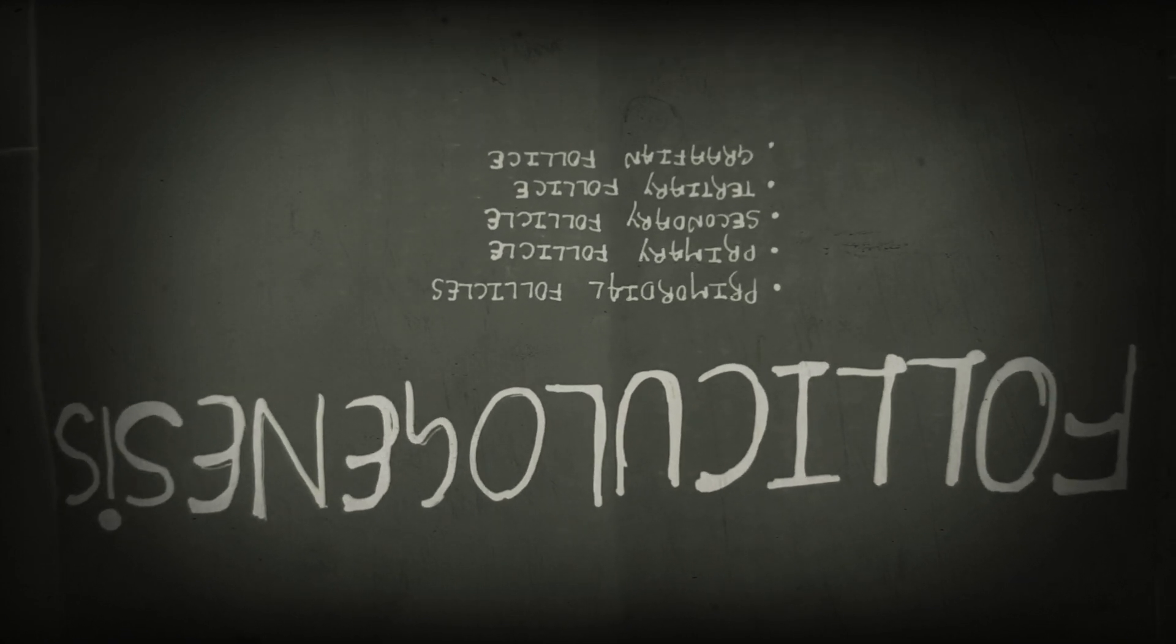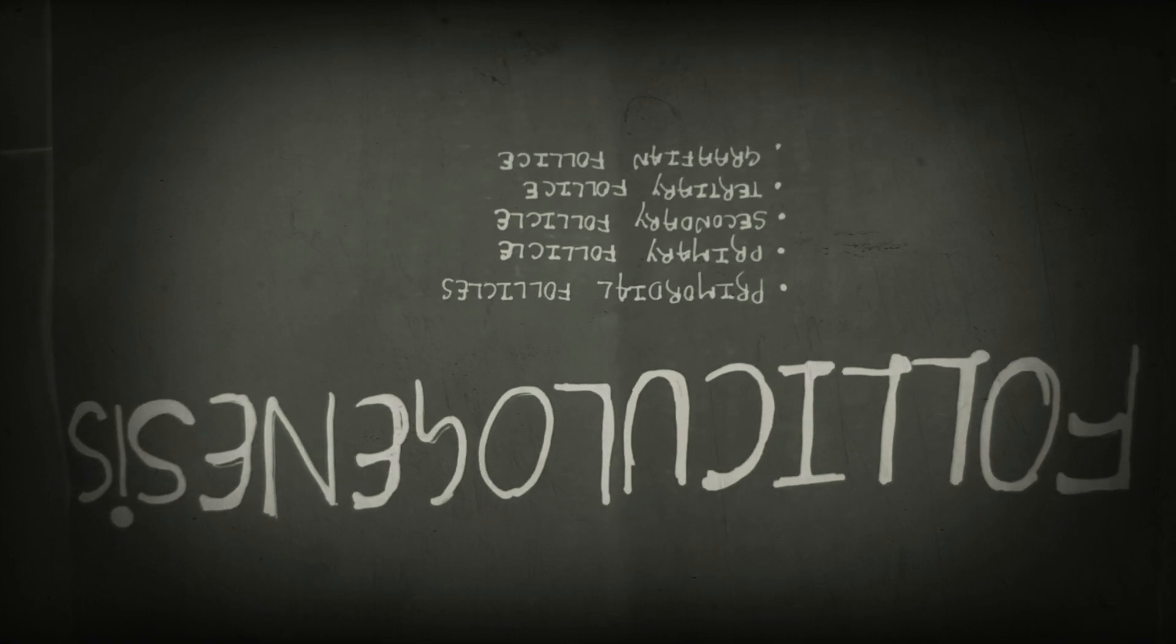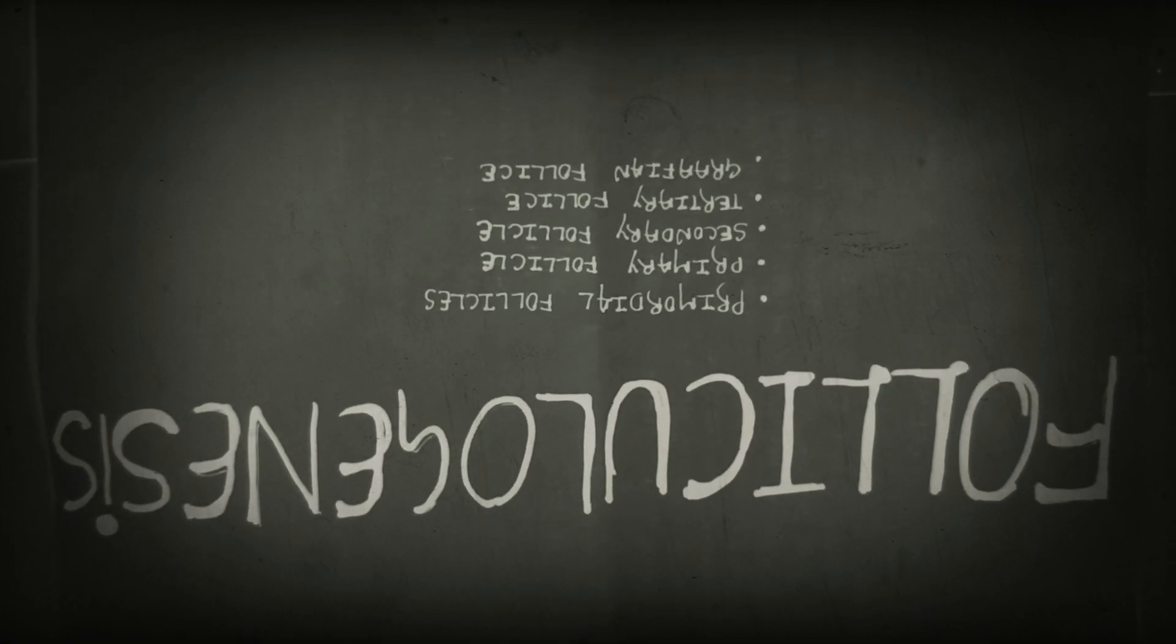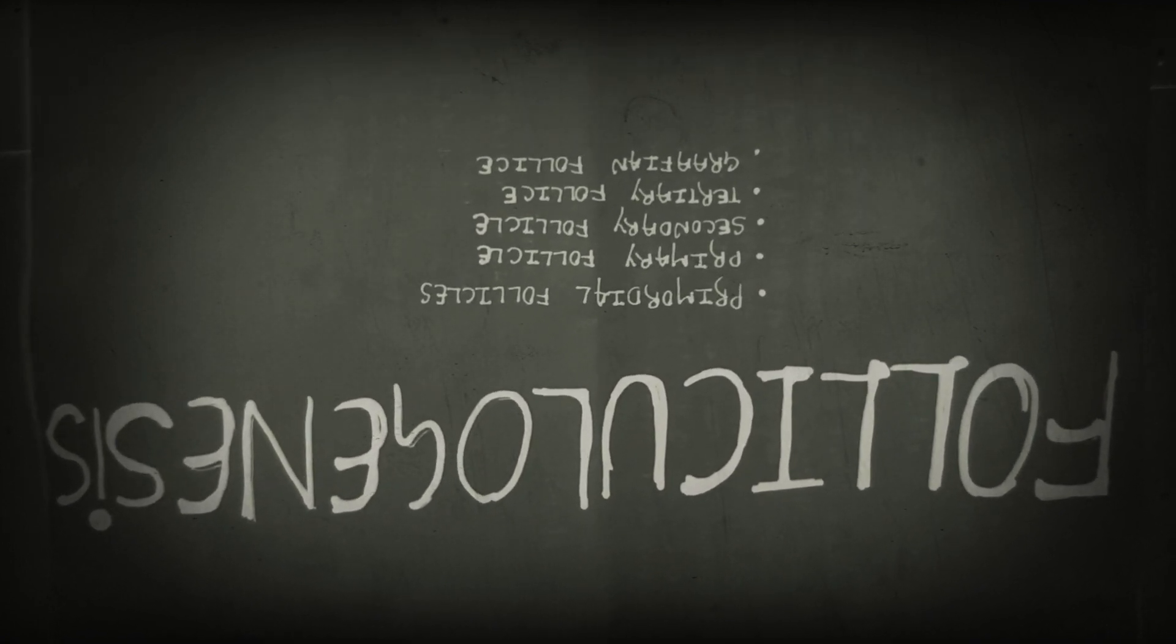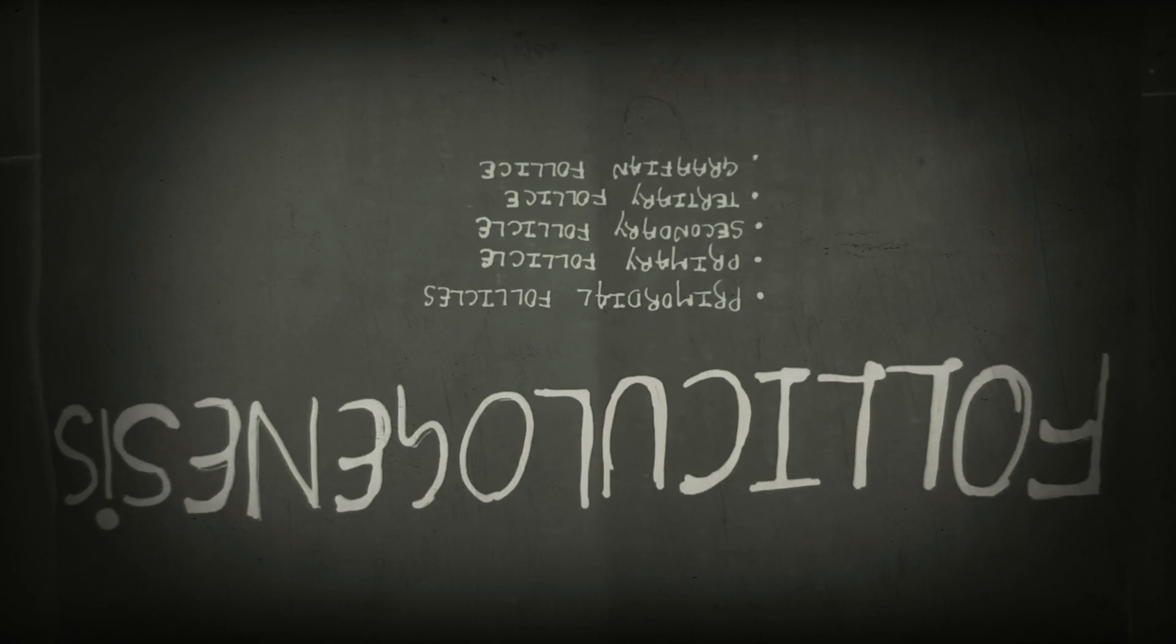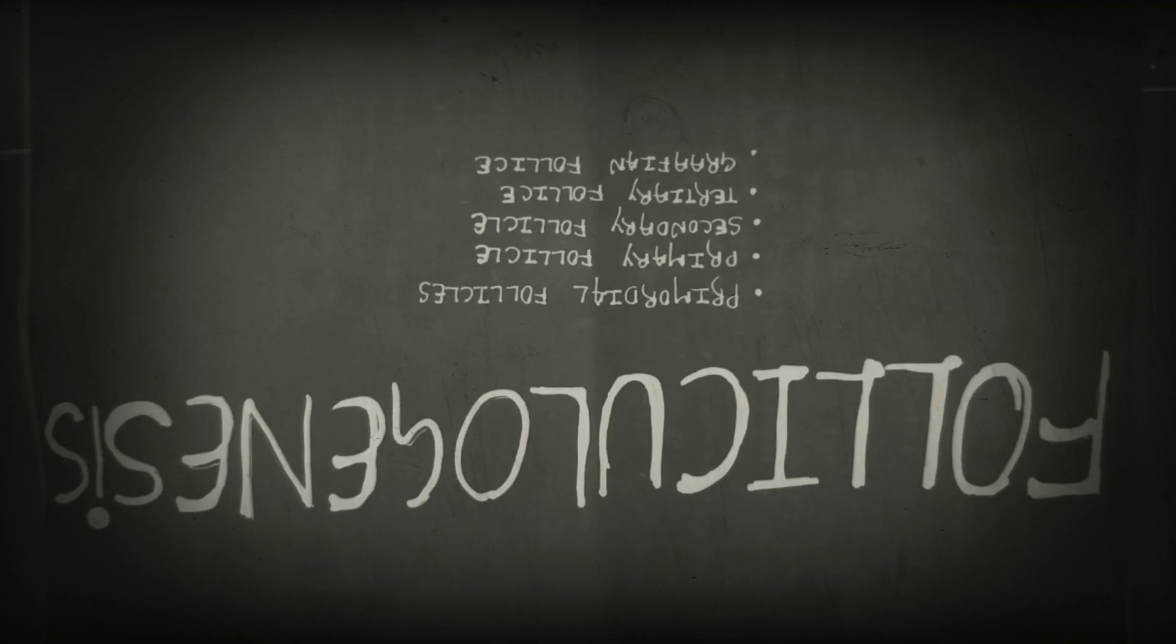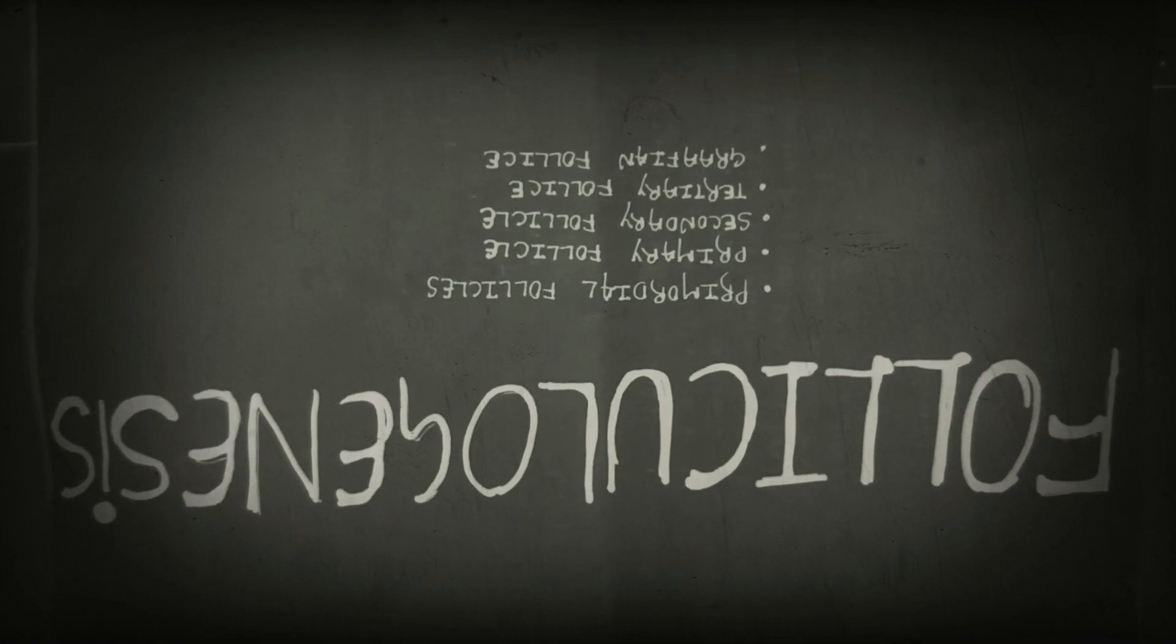Genesis means maturation or development of anything. Folliculogenesis is the maturation of ovarian follicles. There are four stages of the follicles: primordial follicles, primary follicles, secondary follicles, and tertiary follicles.